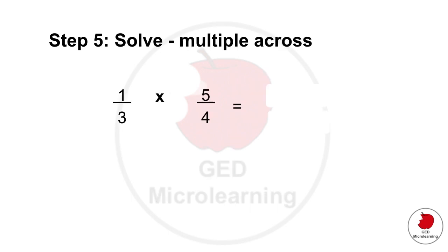So now you can go ahead and solve the problem and remember that when you have two fractions like that that are multiplying all you have to do is multiply across. So if we look at the top at the numerator we would multiply one times five that gives you five and the bottom three times four that gives you 12.